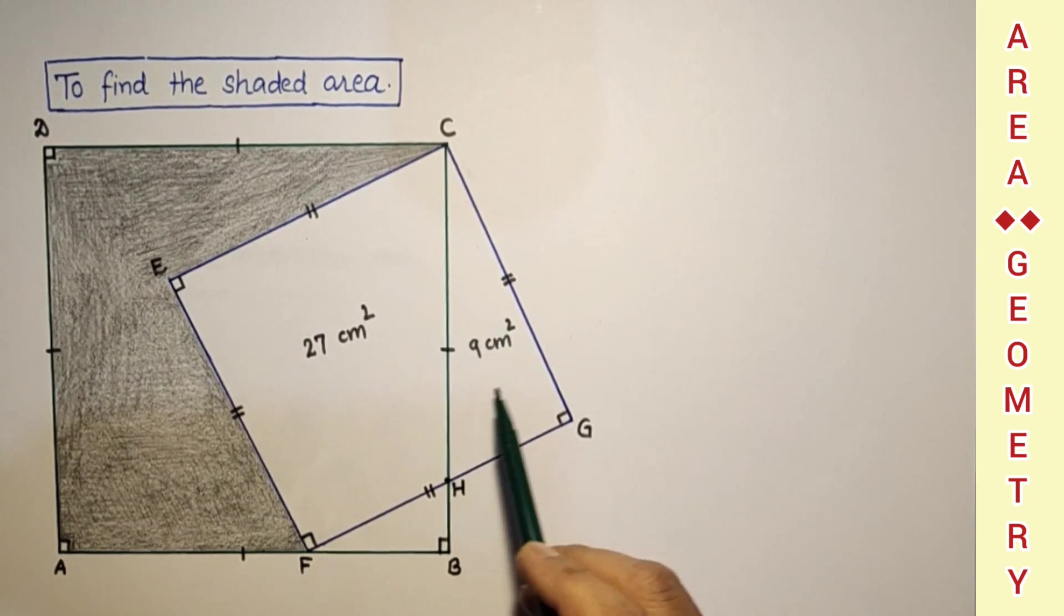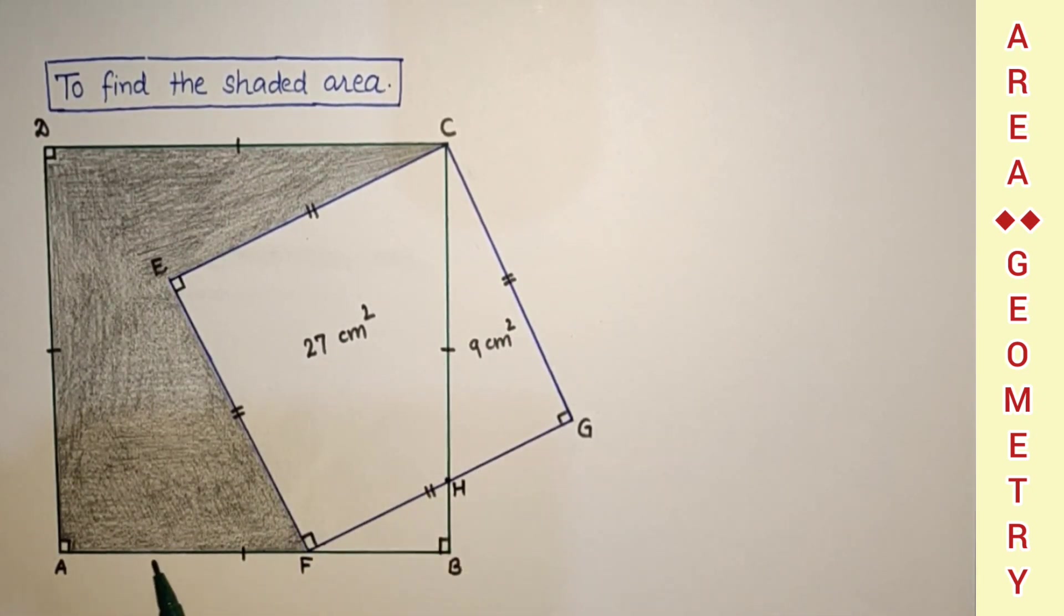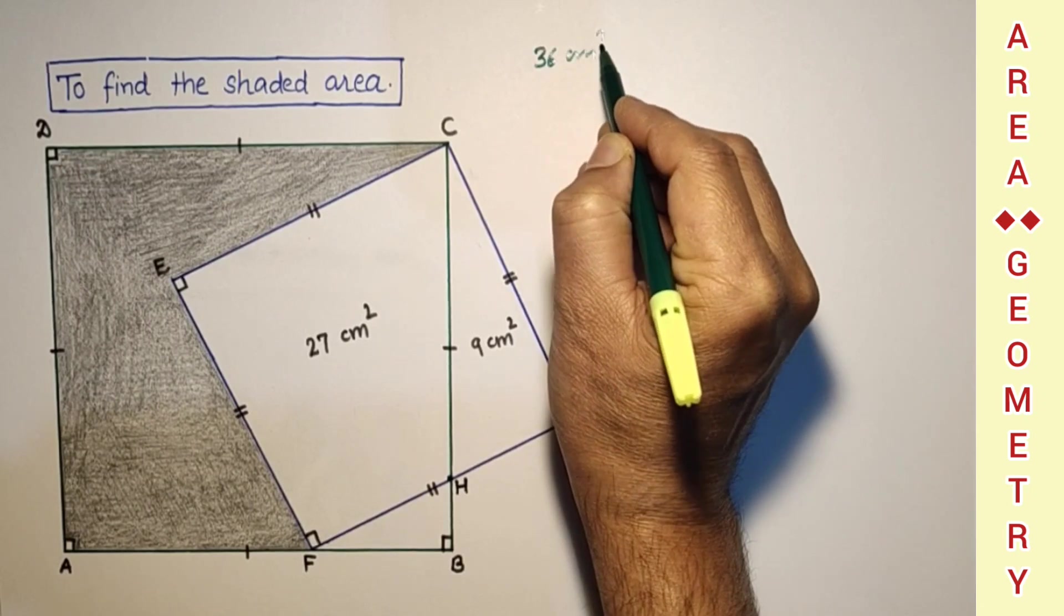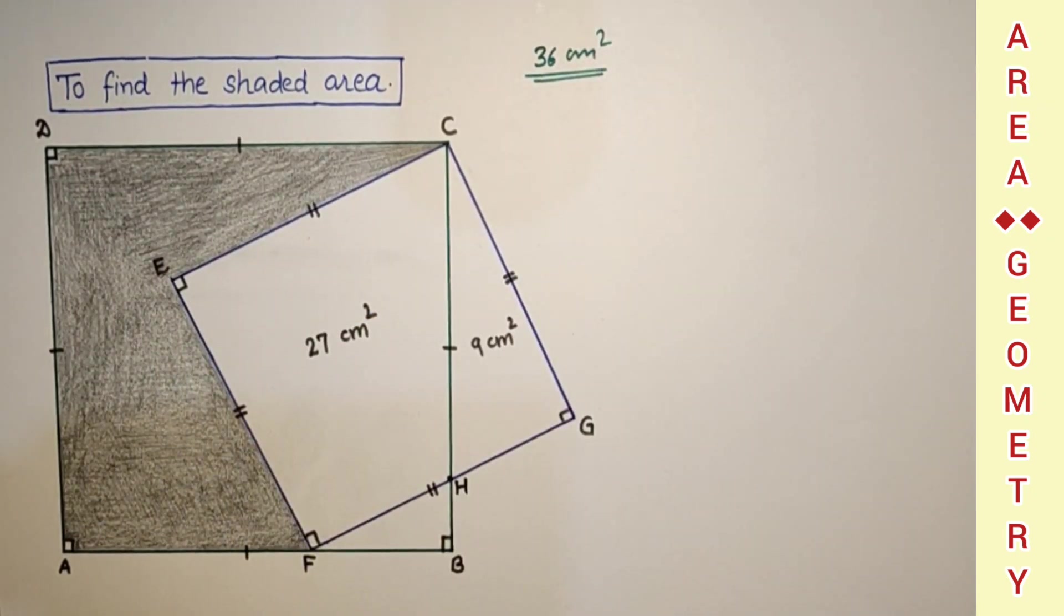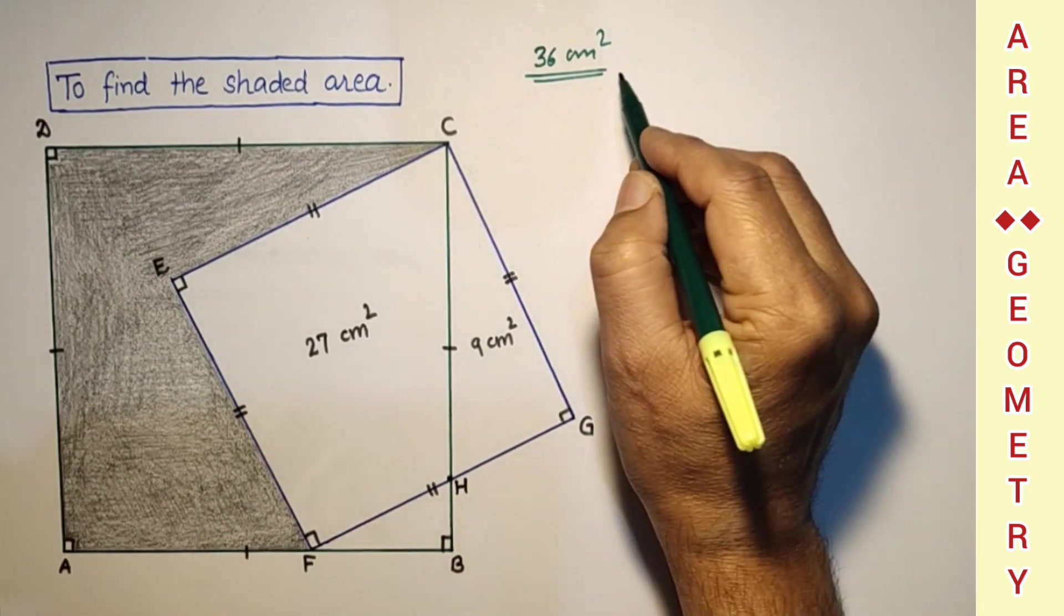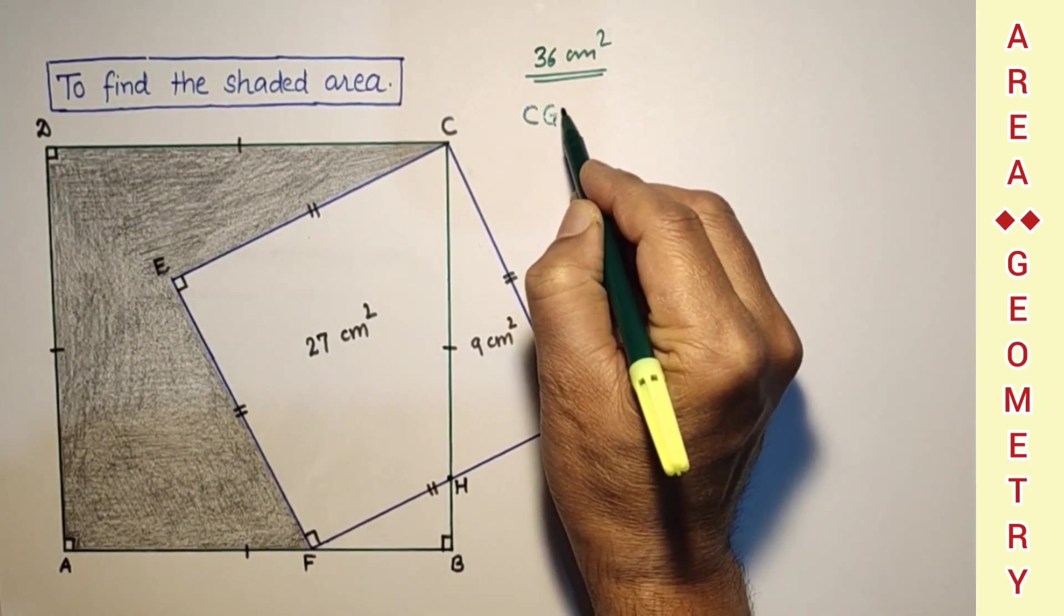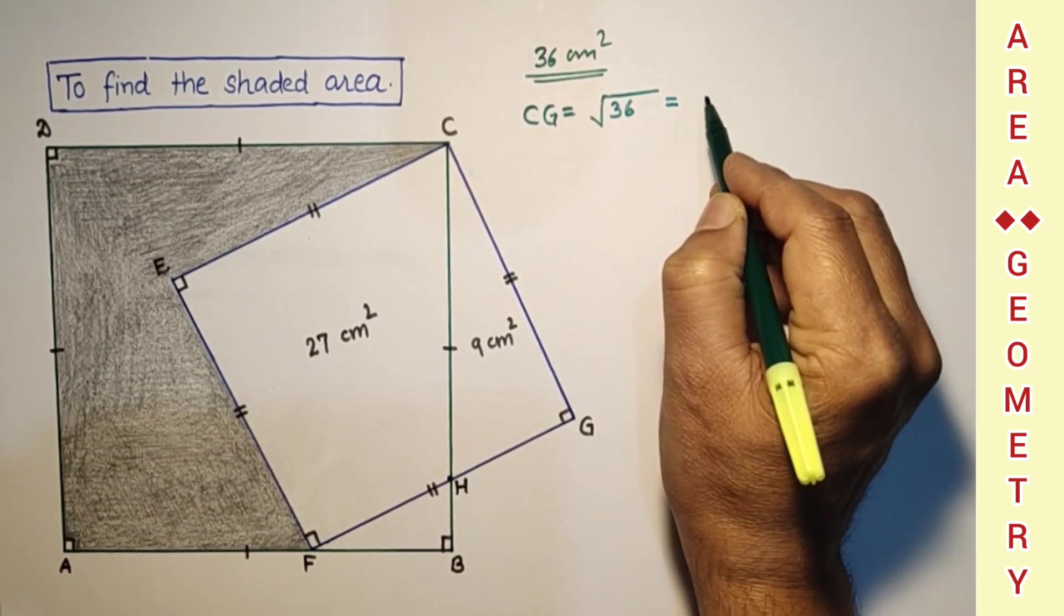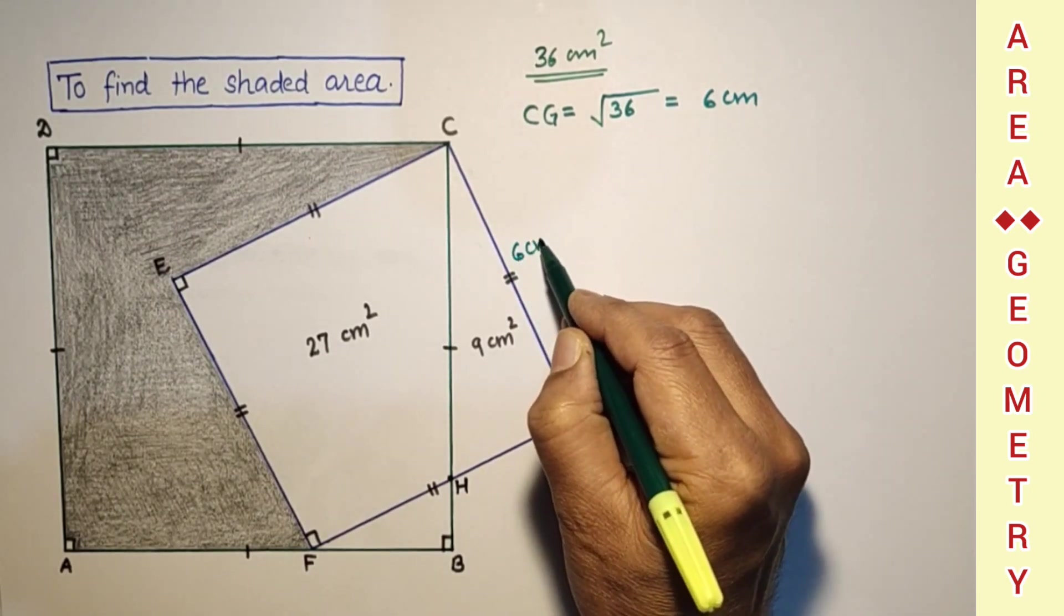Here this part's area is 9 and this part's area is 27. If we sum up these two areas we will get the full square's area and that is coming 27 plus 9, 36 cm square is the area of this square. So side of this square, side CG is equal to square root of 36 and that is 6 cm. So this we found as 6 cm.